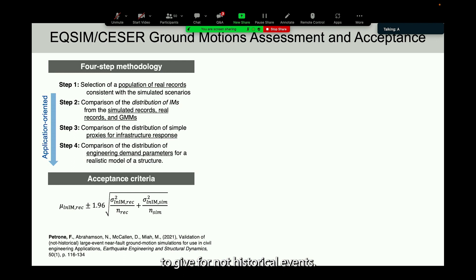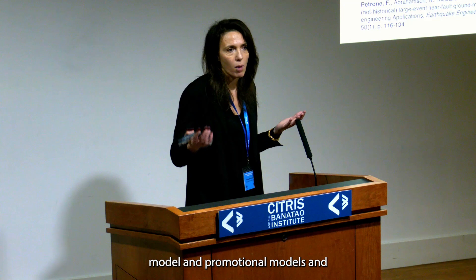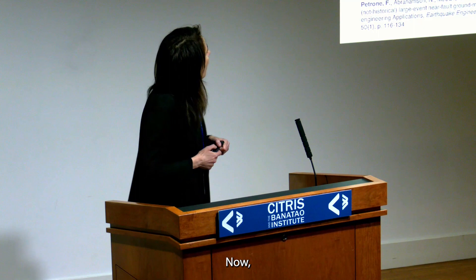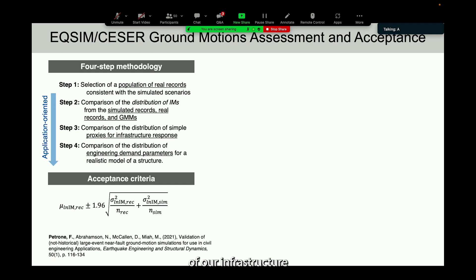This methodology has four separate steps. Step one involves the selection of a population of real records consistent with the simulated scenario, enabling assessment of structural responses from real versus simulated records. In step two, we compare statistics of intensity measure distributions from real records, simulated records, and ground motion models. Step three extends this comparison to infrastructure response proxies. Finally, step four compares the distribution of infrastructure response obtained from the real records selected in step one and from simulated records.